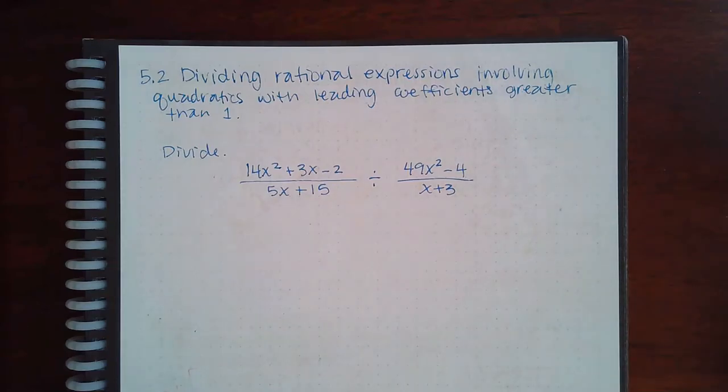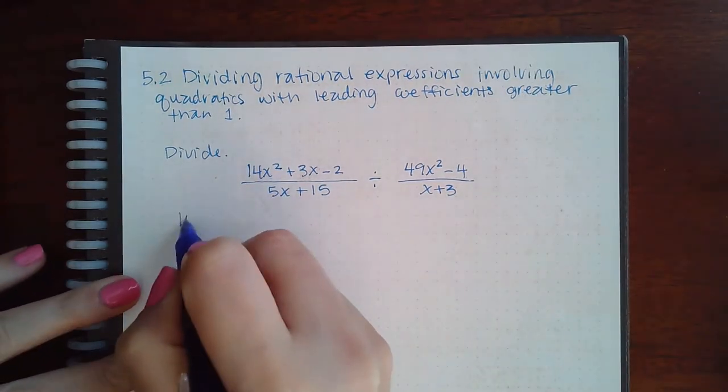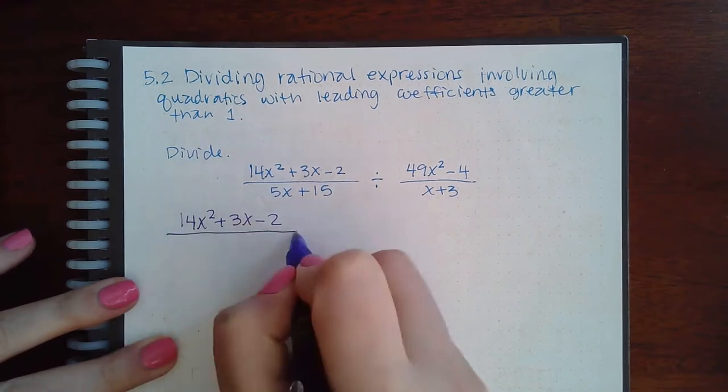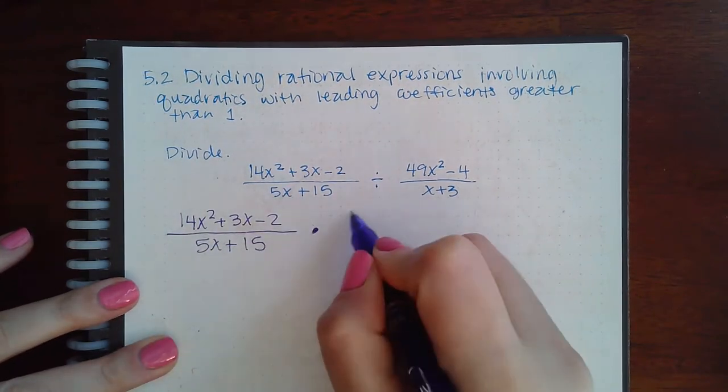Here we have 5.2 dividing rational expressions involving quadratics with leading coefficients greater than 1. There's really nothing different from the other topics. You keep the first fraction exactly as it is and then you switch it to multiplying.